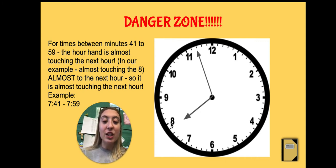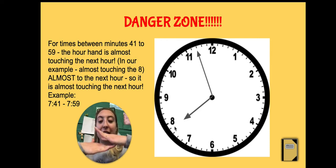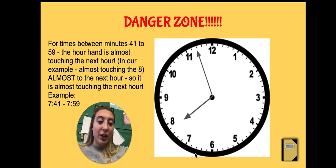This hour hand is so close to the 8 that if we're not careful when we're looking, we would say it's 8:57. But remember, our hour hand keeps going as the minutes go. It's just slower. That's why we always look back. Because if I draw my line, it's not at the 8 yet, and it's not past the 8.